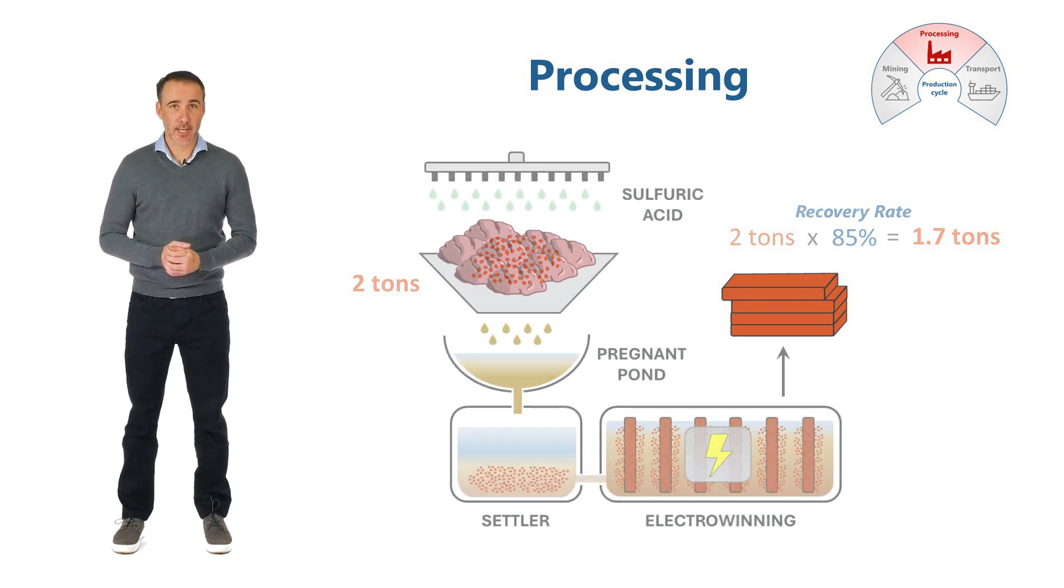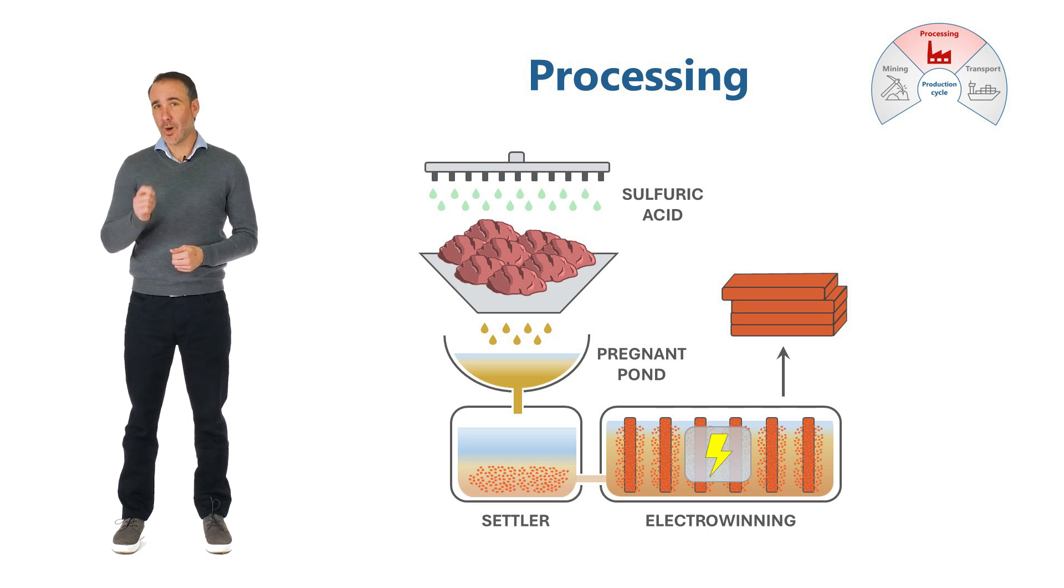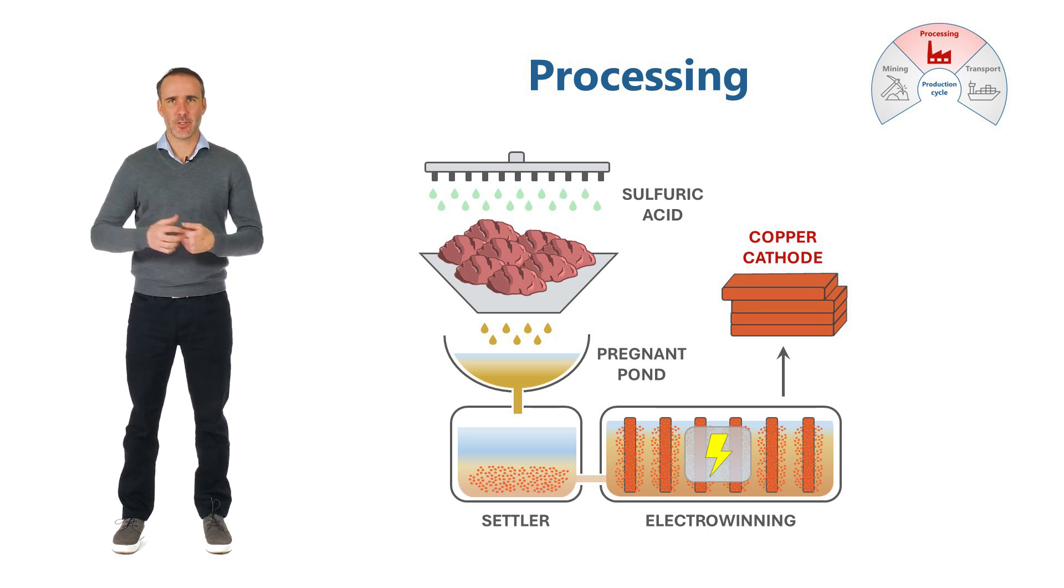The processing stage creates different copper outputs. One such example being copper cathode. Think of it as a sheet of pure copper that can be used to manufacture wires.